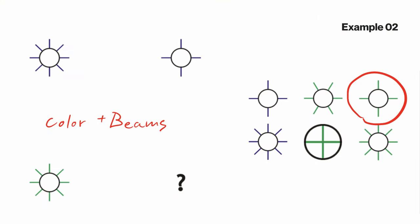This one is probably even easier. We are just looking at colors and shapes — we'll have a circle with four beams in green color. That's pretty easy.